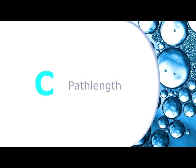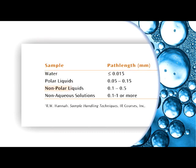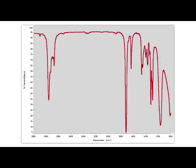The optimal path length is sample dependent. As a rule of thumb for measurements in the mid-infrared, typical path lengths for polar liquids are 50 microns to 0.15 millimeters. For water, 15 microns or less. Non-polar liquids from 0.1 to 0.5 millimeters, and non-aqueous solutions from 0.1 to 1 millimeter or more. Generally, it's desirable to have the absorbance bands of interest range from 20 to 80% transmission.